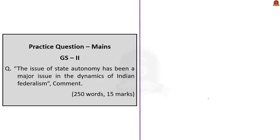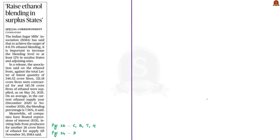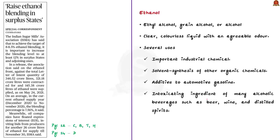The Indian Sugar Mills Association has said that in order to achieve a target of 8 to 8.5 percent ethanol blending, it is important to increase the blending level to at least 12 percent in ethanol surplus states. In this context let us learn about ethanol and ethanol blending.